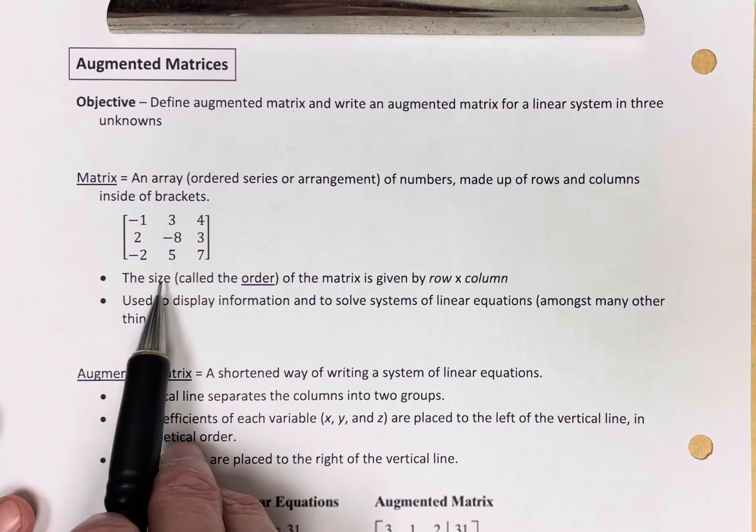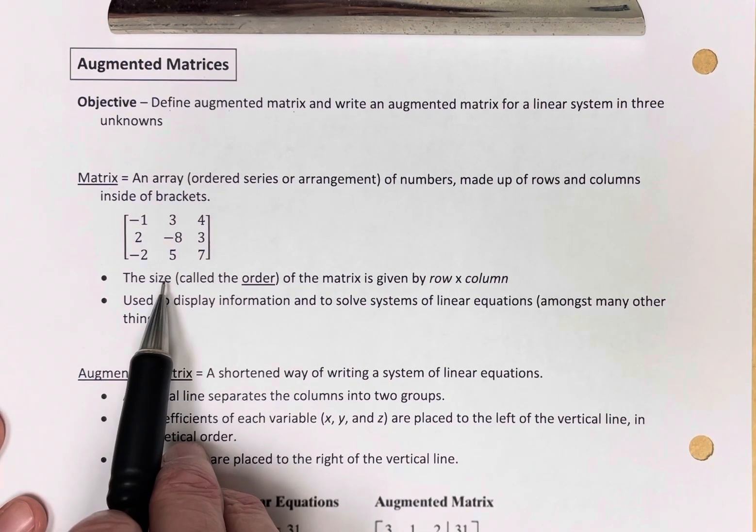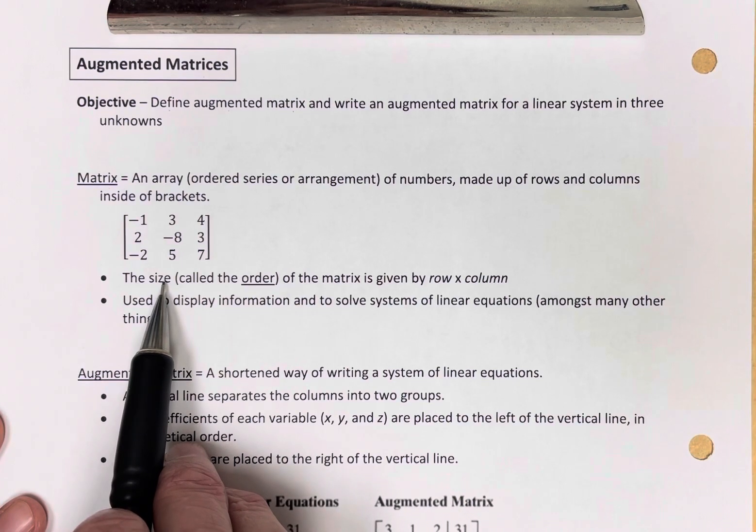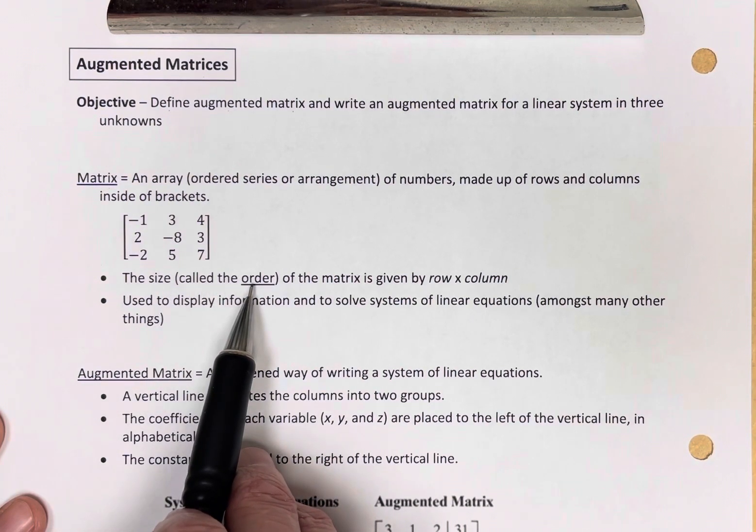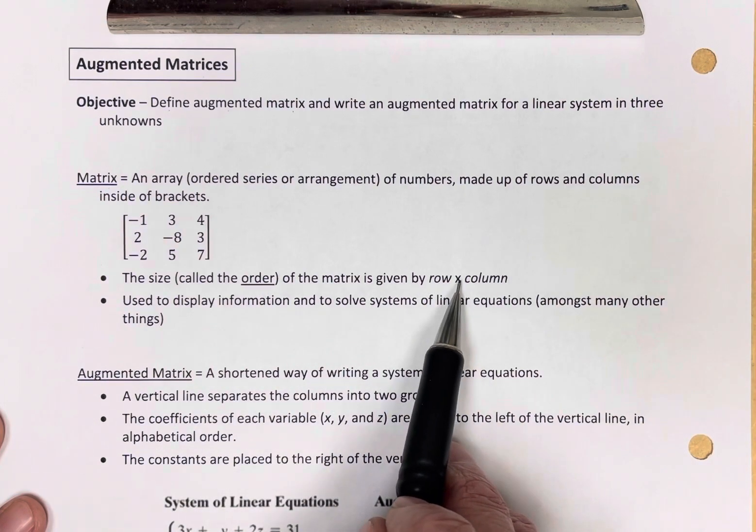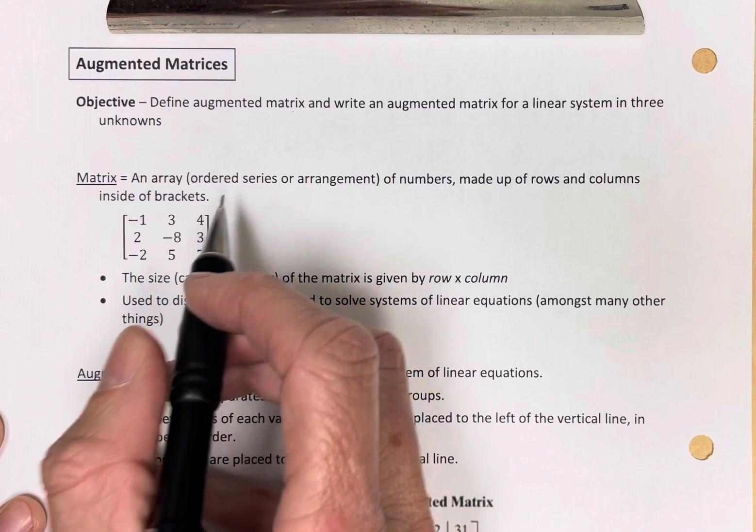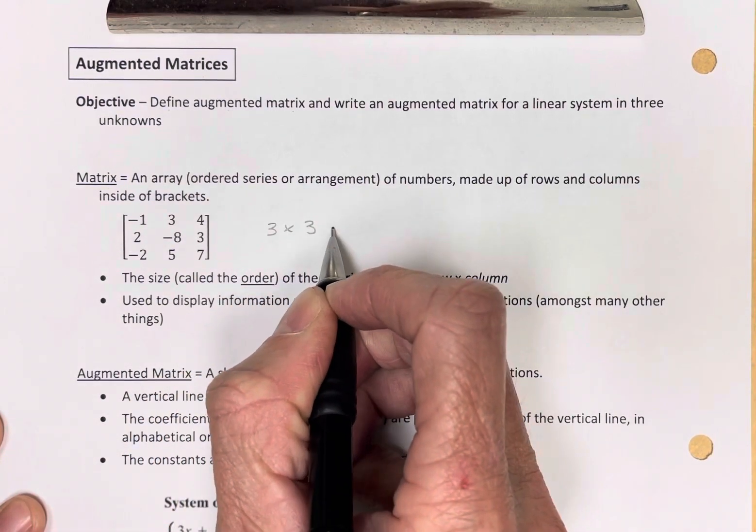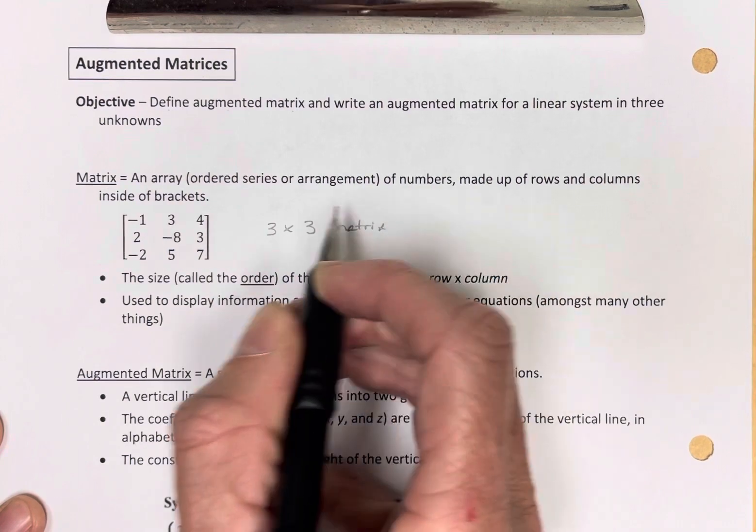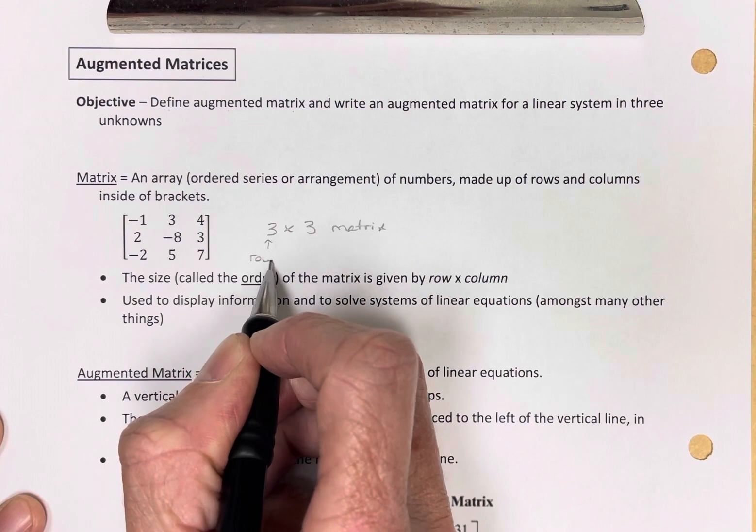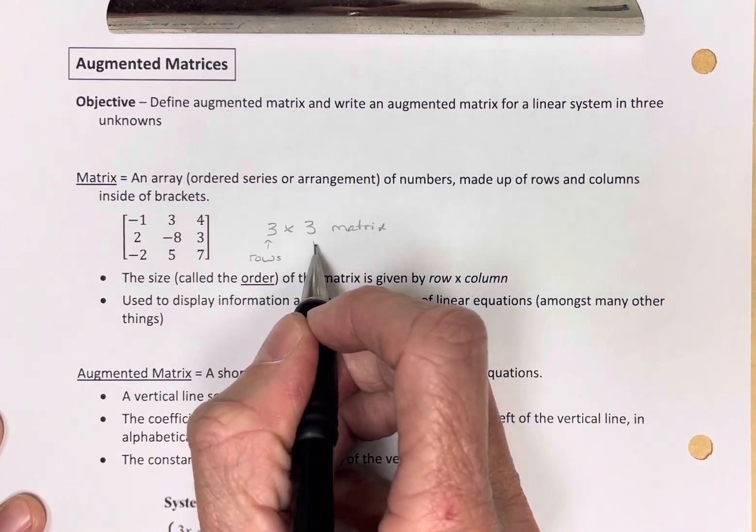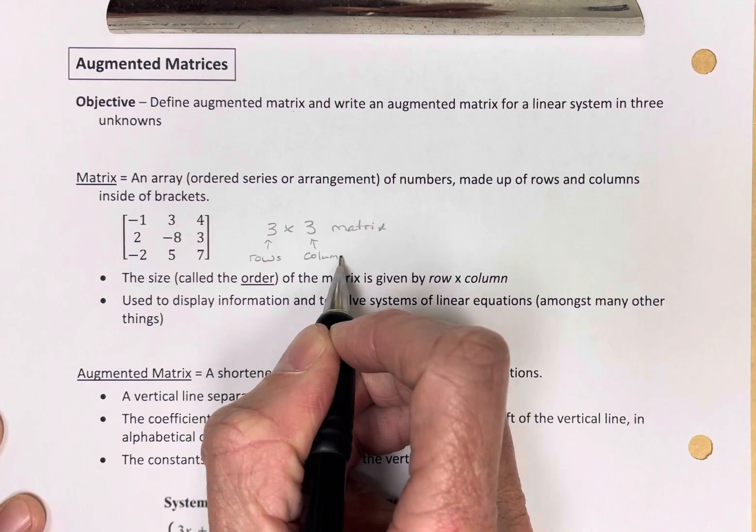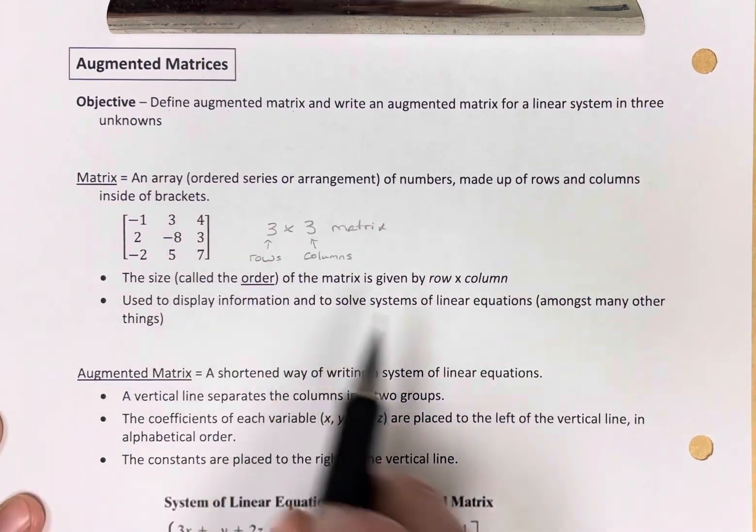Matrices are defined by their size, which is called the order, and it's given by row x column. So, this matrix is a three-by-three matrix. The first number represents the number of rows, and the second number represents the number of columns.